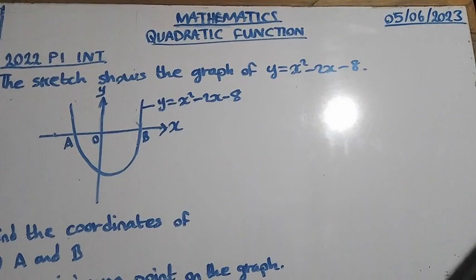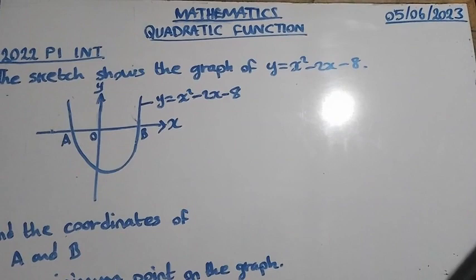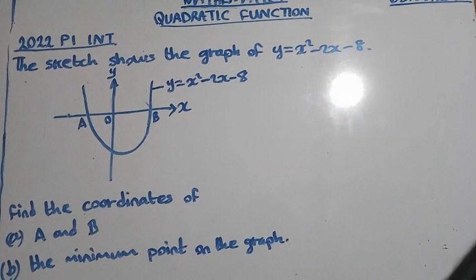The sketch shows the graph of y equal to x squared minus 2x minus 8. Find the coordinates of A and B.